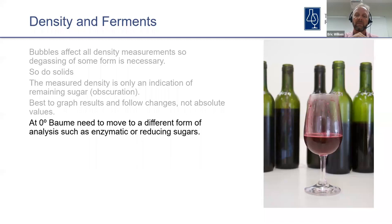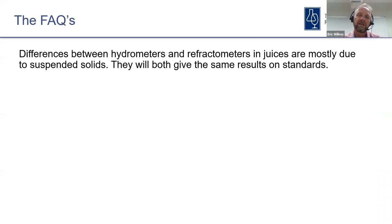Bubbles affect all density measurements, so degassing is necessary since we generate CO2 during fermentation. The most common way to degas is to put the sample in a small container, shake it vigorously, open the container and take the measurement as quickly as possible. Solids also make a difference to density measurements — if they're less dense than the solution they'll contribute to the reading. Reducing sugars in reds have lots of interferences especially in ferment, so it's very hard to get to actually zero sugar using that kind of measurement.